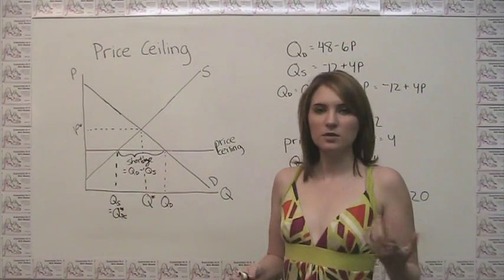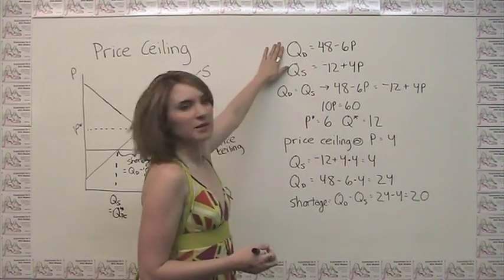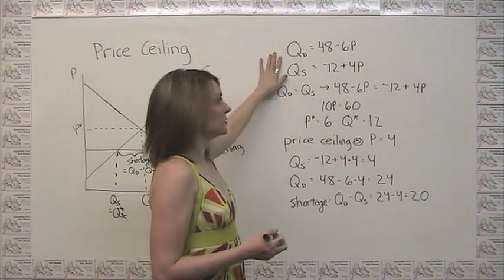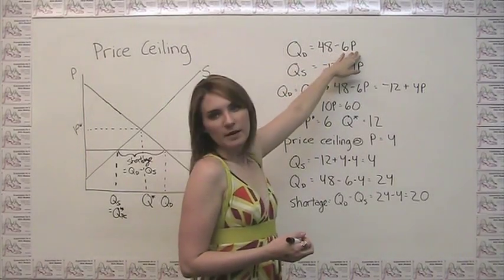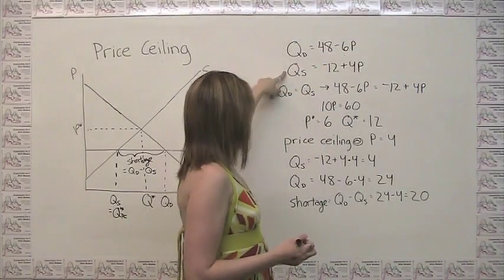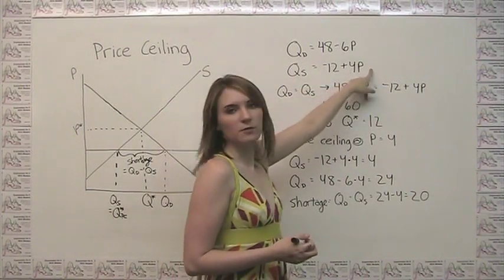So let's put some numbers to this in order to better understand what's going on. I have an equation for a demand curve here and an equation for a supply curve. Quantity demanded equals 48 minus 6 times the price, and quantity supplied equals negative 12 plus 4 times the price.